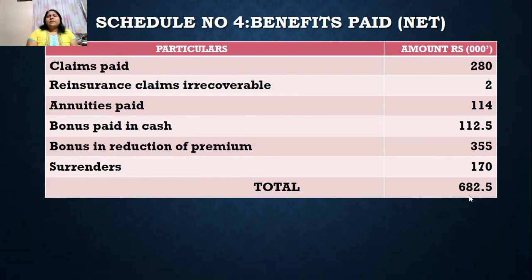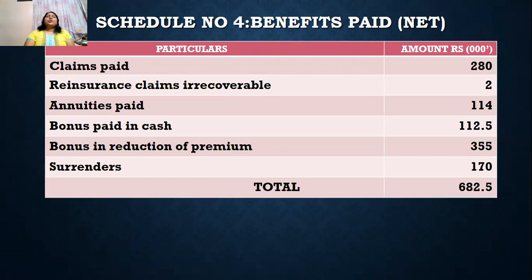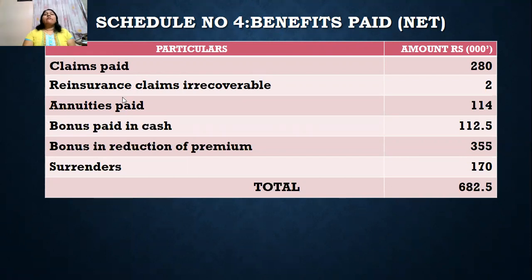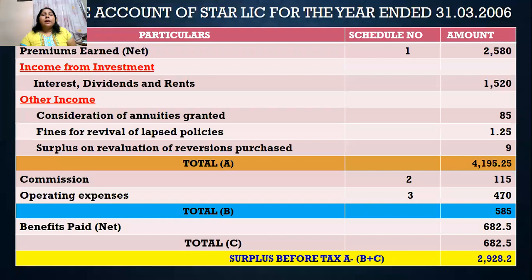Reinsurance claims recoverable — since they are irrecoverable, this company cannot claim from another insurance company, so those claims remain an expense for this company. That is why we are considering them as one of the benefits paid. Once all four schedules are completed — schedule one through four — which are necessary for preparing the revenue account, we start preparing the revenue account as per the format.